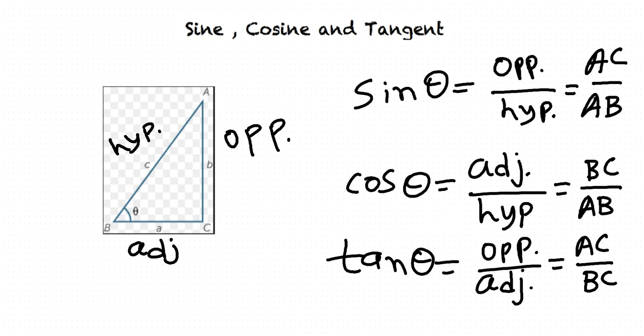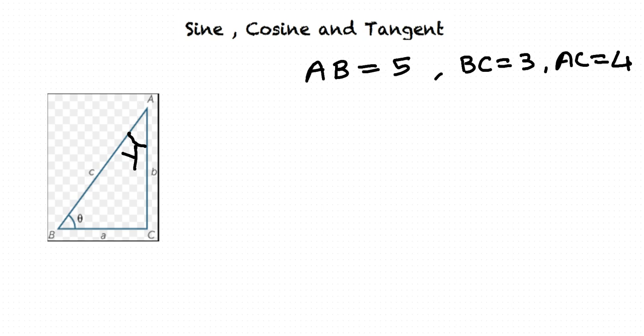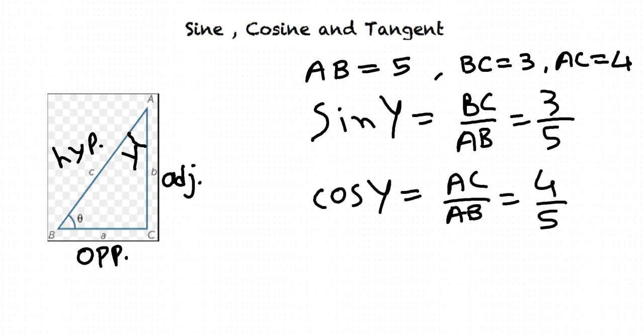Can you give me an example? Sure. Here is an example. ABC is a right-angled triangle with length of sides AB equal to 5, BC equal to 3, and AC equal to 4. We want to find out the values of the trigonometric functions for angle Y. For angle Y, the opposite side will be BC and the adjacent side will be AC. AB is the hypotenuse of the triangle. According to definitions, sine Y is equal to BC divided by AB, which is equal to 3 divided by 5. Cos Y is equal to AC divided by AB, that is equal to 4 divided by 5. And tan Y is equal to BC divided by AC, that is equal to 3 divided by 4.